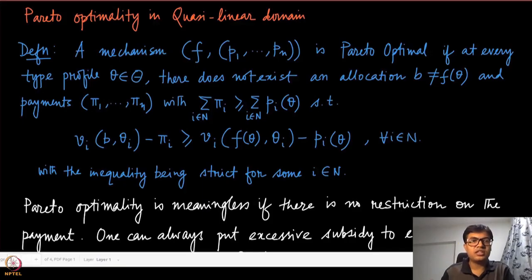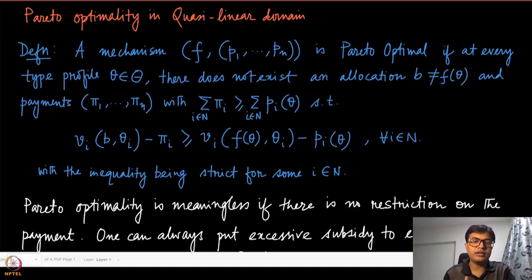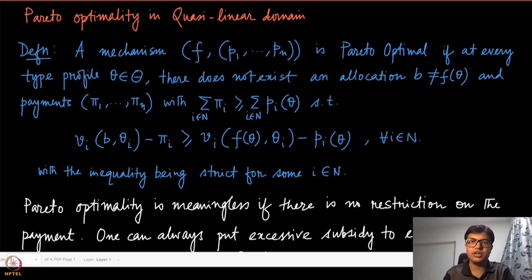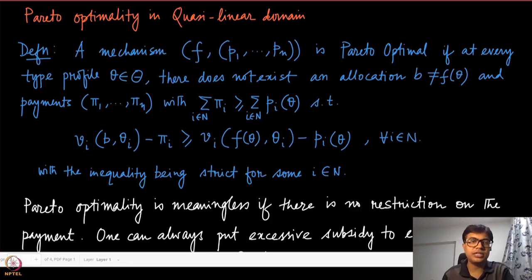Let us now start discussing the Pareto-Optimality notion in the Quasilinear domain. Pareto-Optimality or Pareto-Efficiency, as we have already referred to earlier, is a notion where we talk about the improvement of each of the utilities of every player rather than maximizing the sum or an aggregate measure. The difference is that in Pareto-Optimality we will have to look at the payment component as well, while in allocative efficiency we were just looking at the allocation component of the decision problem.